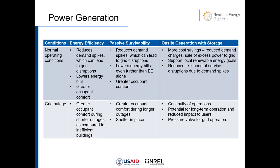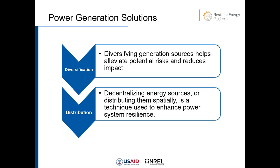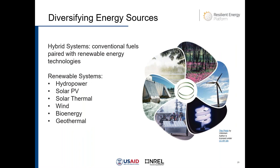Two strategies to consider within power generation solutions are diversifying generation sources and distributing them geographically. Having more than one type of power generation source within a portfolio helps alleviate potential risks. Decentralizing or geographically distributing generation sources can mitigate physical hazards and threats. For example, if a tornado wipes out a power source, and generation sources are spread out, the chances of all of them being wiped out are reduced.